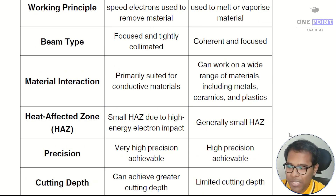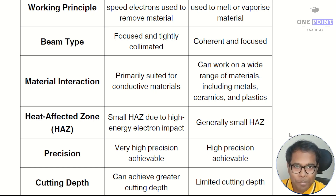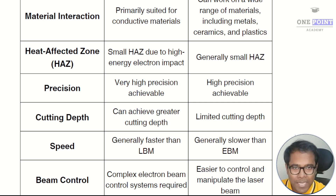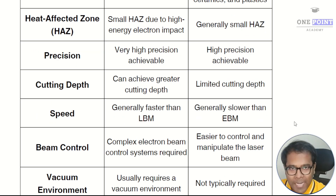Fifth is heat affected zone: in electron beam machining the heat affected zone is quite small due to high energy electron impact, whereas in laser beam machining the heat affected zone is still small but slightly larger than in electron beam machining. Sixth is precision: electron beam machining can achieve slightly higher precision than laser beam machining.